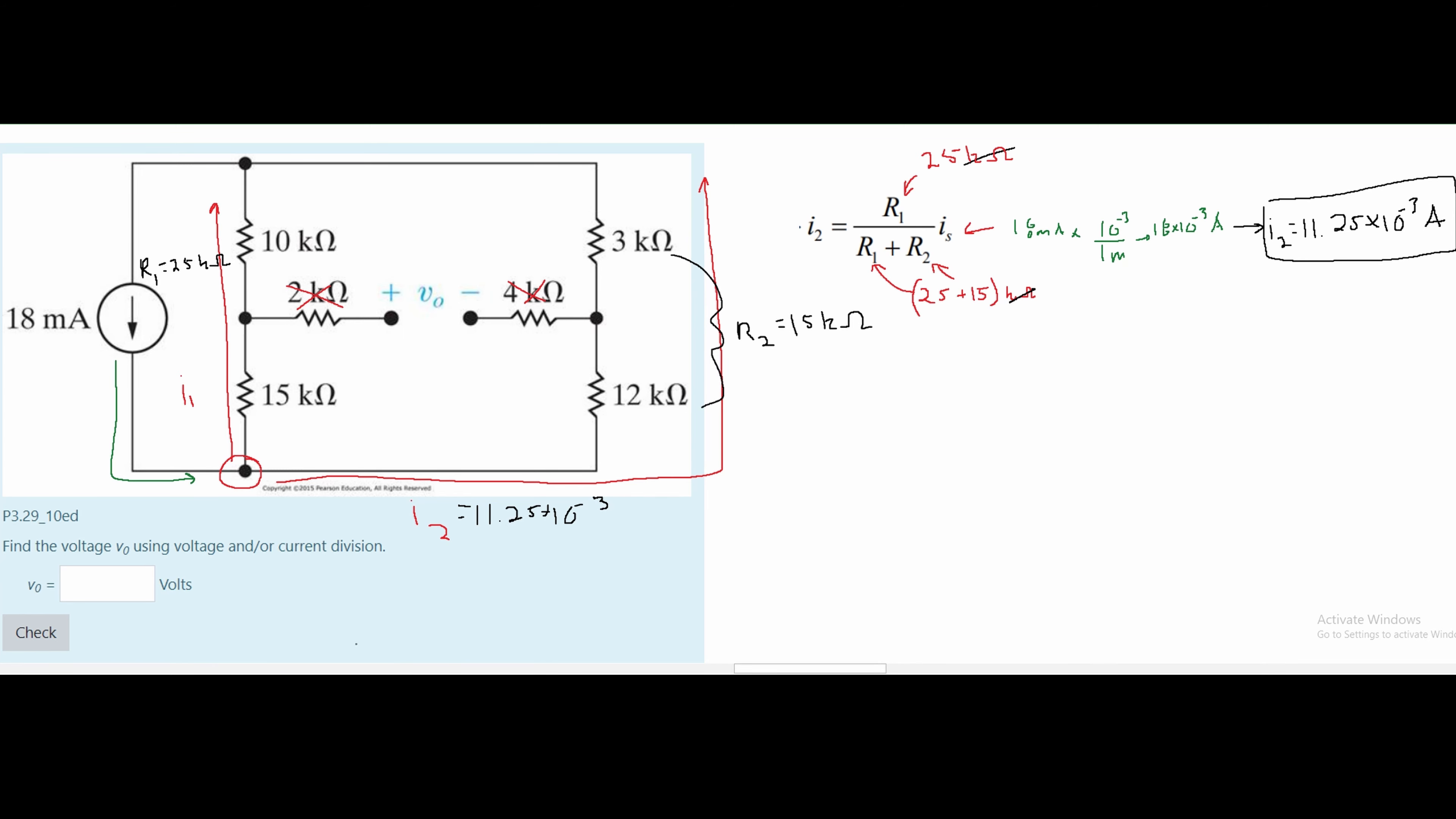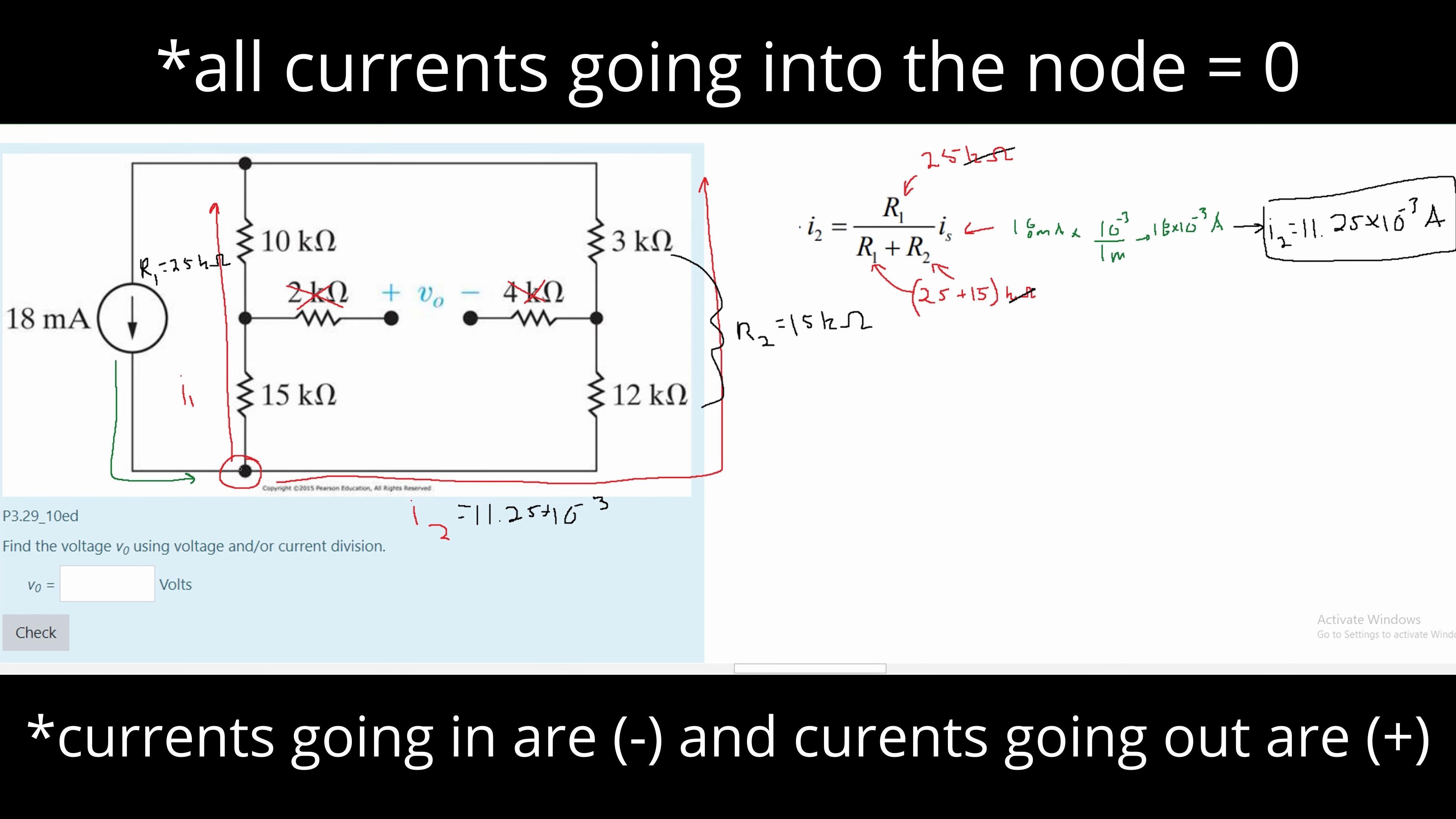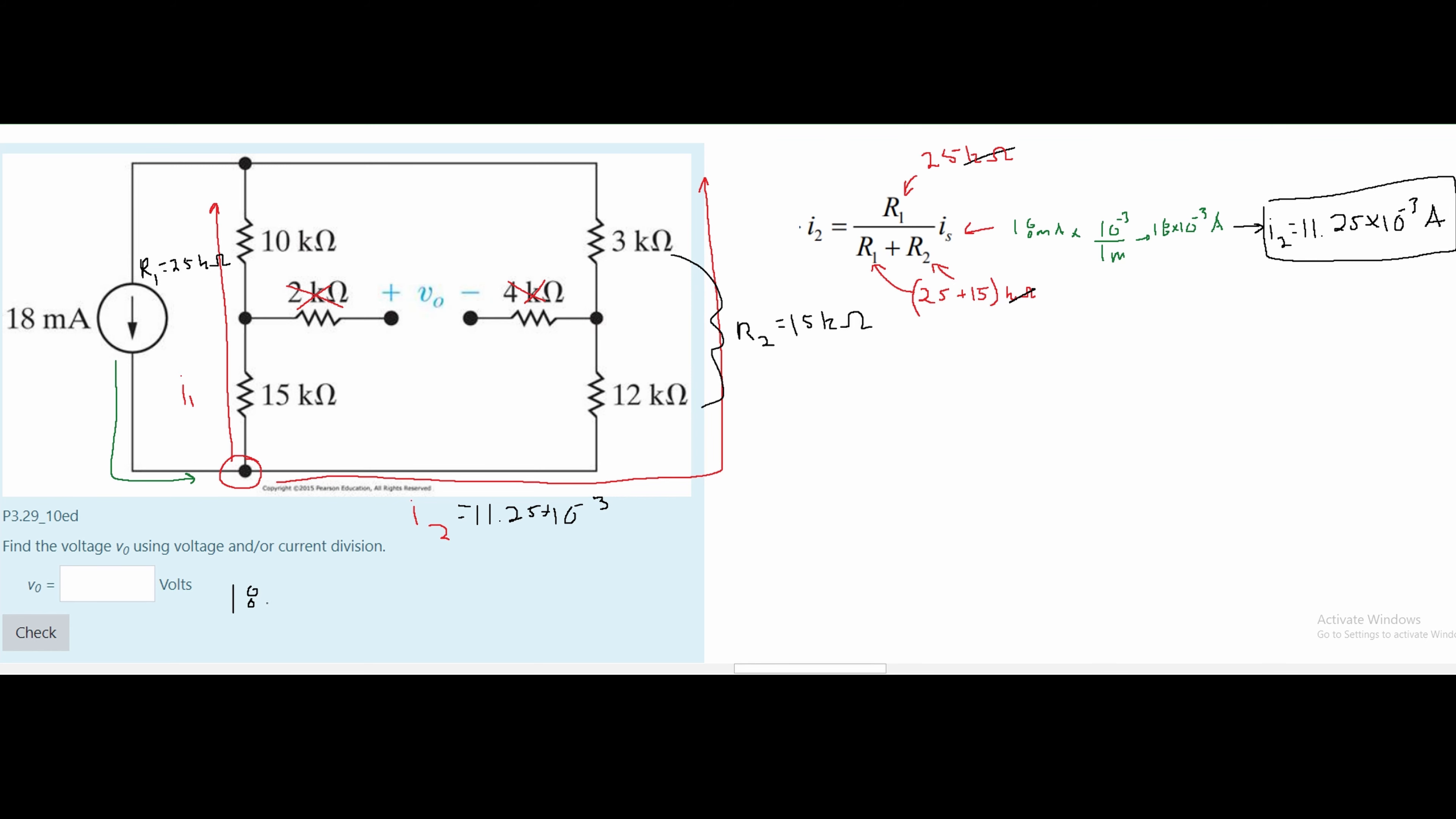To find our I1, all we need to do is subtract it from our initial current. We can also use Kirchhoff's current law and say that the current going into this node is equal to zero, the currents going in is negative and the currents going out are positive. Or we can just say that our 18 times 10 to the negative cubed must equal I1 plus our I2. That means that our I1 must equal 6.75 amps.